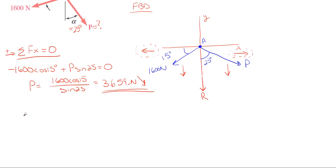So now if we sum forces in the y direction, it should be equal to my resultant force. So we're going to have our component of the 1600 and our component of the P force, which we just found, they're going to combine to make the R value. So let's sum forces in the y direction. We'll take downward as positive, since everything's aimed downwards.